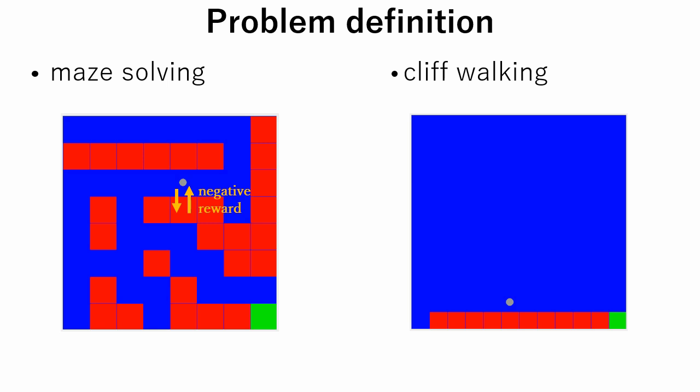In the cliff walking problem, stepping into a cliff ends the episode and the agent is returned to the starting point.